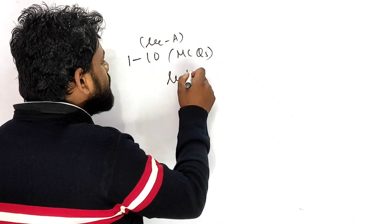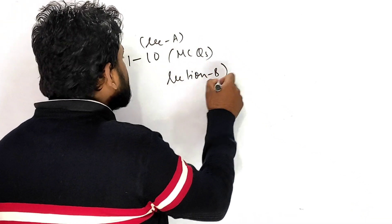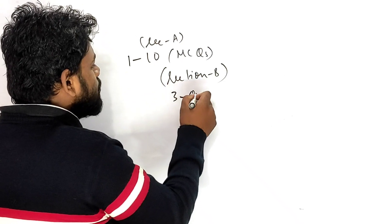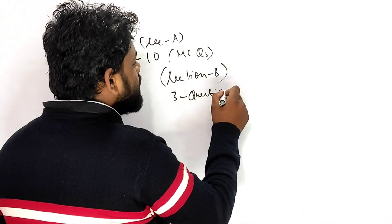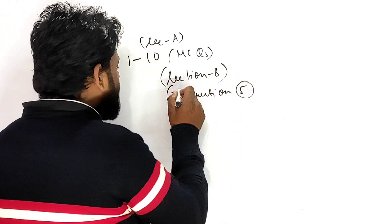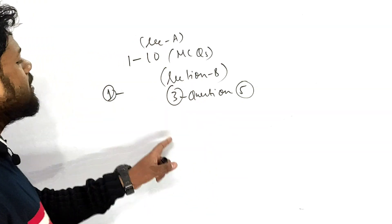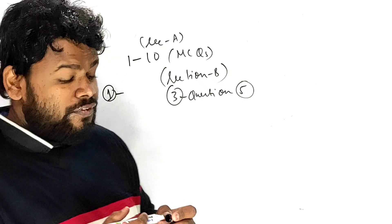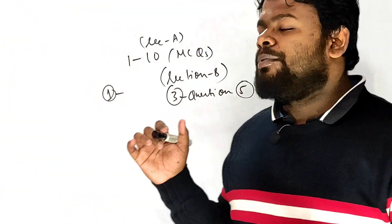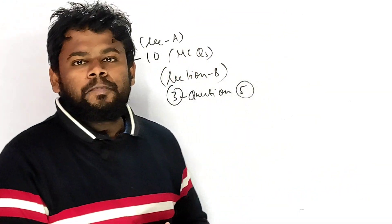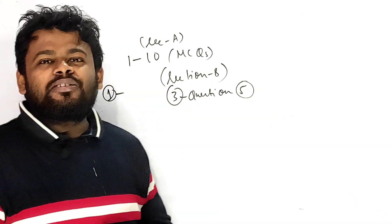The first 10 questions is section A that stands for all kind of MCQs. In case of section B, you have to attempt any three questions out of five. That means in one question 10 marks are there, so three questions you have to attempt out of five.